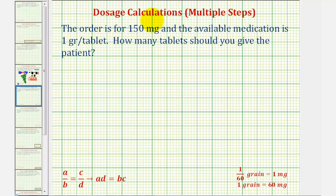Welcome to an example of a dosage calculation that requires multiple steps. The order is for 150 milligrams and the available medication is one grain per tablet. How many tablets should you give the patient?